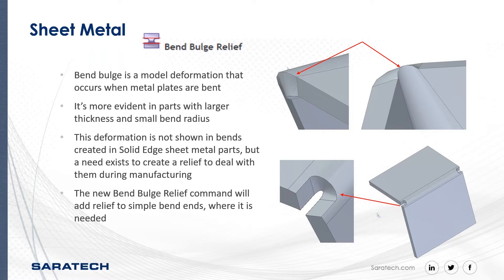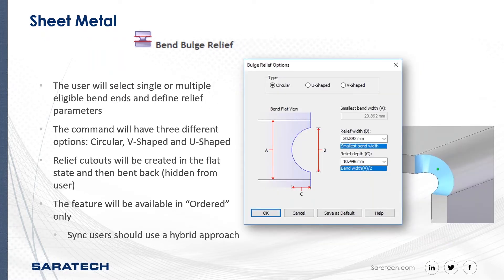In the past, if you put this on a brake, you need that little bit of relief there so it doesn't split the sheet metal. The user will select single or multiple eligible bend ends and define relief parameters.